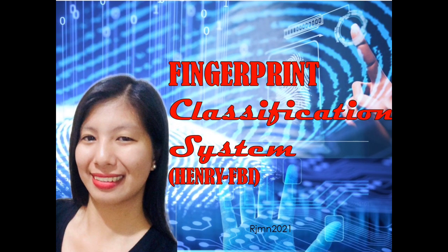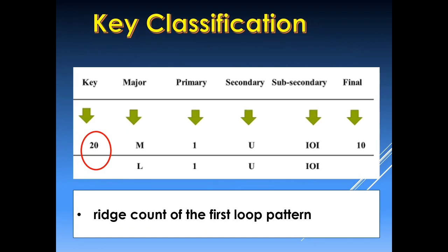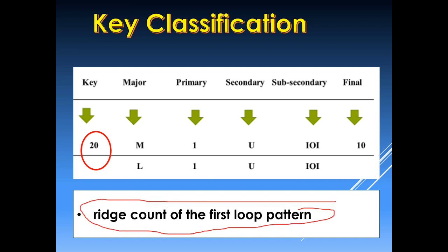Hello guys. For today's video I will be discussing the fingerprint classification system, specifically the Henry classification as modified by the Federal Bureau of Investigation. We are now on our last video for this series on the Henry classification, and we are going to discuss the key classification. The key classification is placed at the extreme left of the numerator in the classification line, under the left of the major classification.